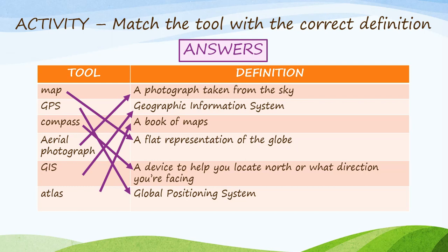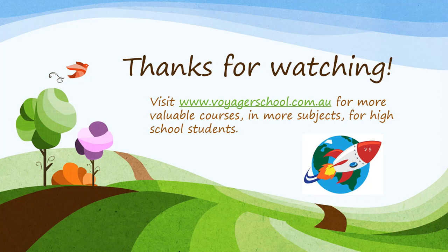Welcome back — here are the answers to our matching activity. A map is a flat representation of the globe. GPS is short for Global Positioning System. A compass is a device to help you locate north or what direction you are facing. An aerial photograph is a photograph taken from the sky. A GIS is a geographic information system. And an atlas is a book of maps. That brings us to the end of lesson two: the tools of a geographer, in our Year 7 Geography unit on Mapping Skills. Thanks very much for watching. Don't forget to visit our website at www.voyagerschool.com.au for more valuable courses in more subjects for high school students. See you next time.